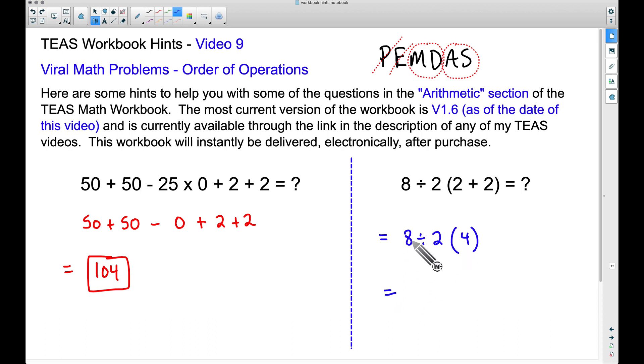8 ÷ 2 gives us 4. Let's bring this one on down. And 4 × 4 now gives us a final answer of 16.